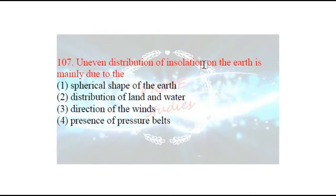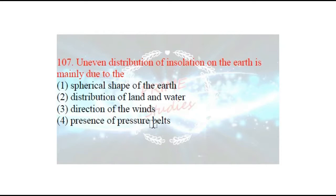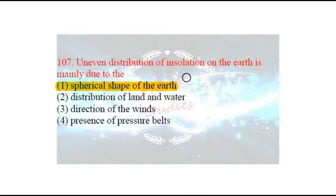Next question: uneven distribution of insolation on earth is mainly due to what? Earth ke upar jo surya tap aata hai, uska uneven — matlab visham vitaran kyun hai? The options are: spherical shape of the earth, distribution of land and water, direction of the winds, or presence of pressure belts. The right answer is spherical shape of earth — prithvi ki jo shape hai, woh gole ki tarah hai. Equator ke upar zyada garmi padti hai, isliye insolation ka visham vitaran hota hai.